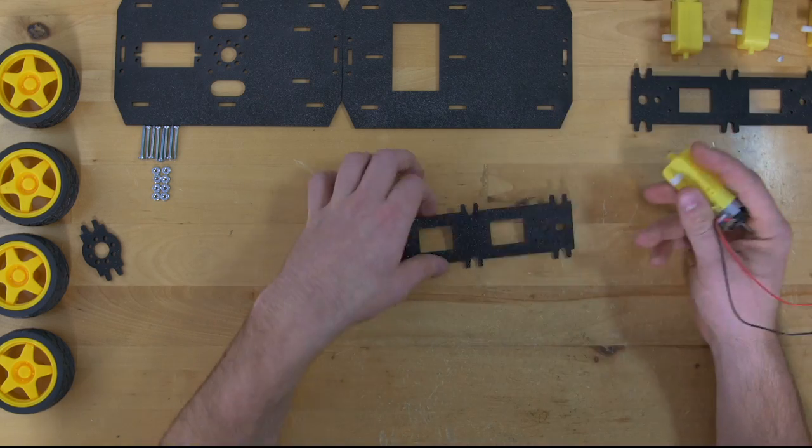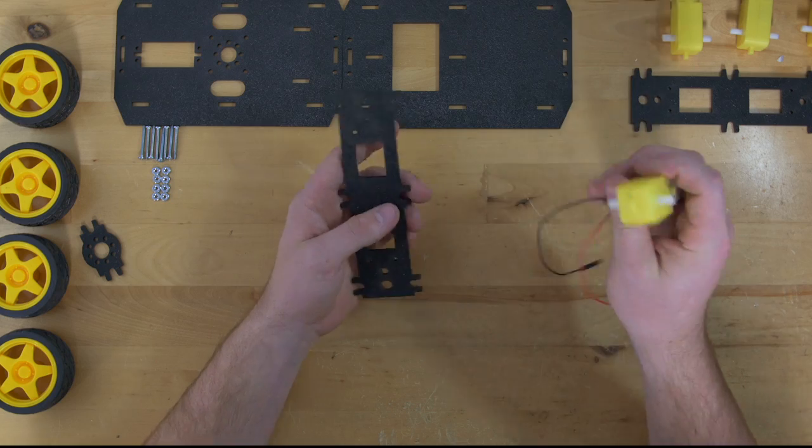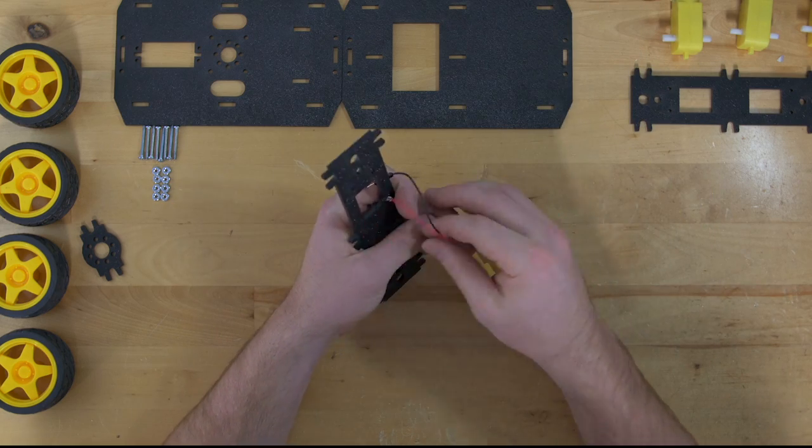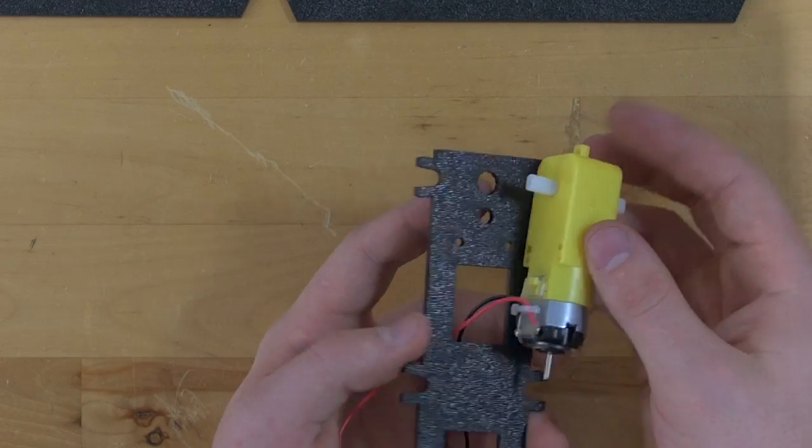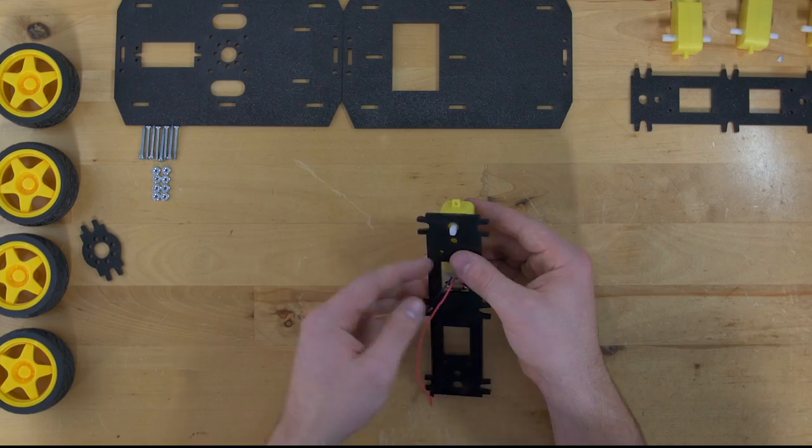For the first step, we're going to attach our motors to the side plates. In order to do this, we'll take our wires and feed them through these square holes in the plates and then stick the output shaft through this hole here on the outside.